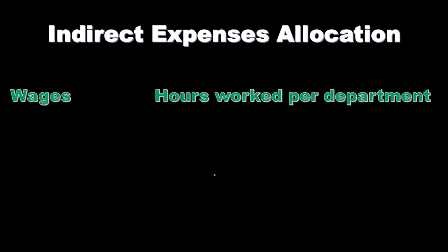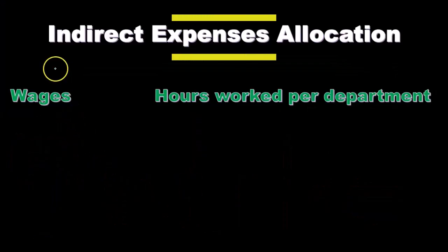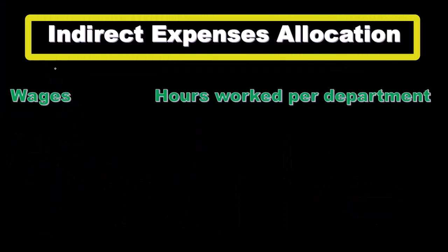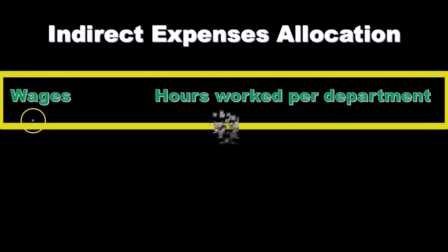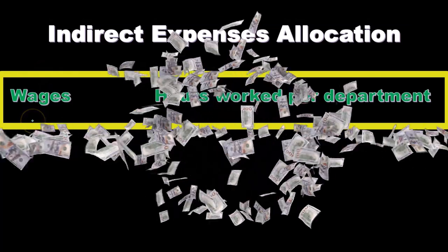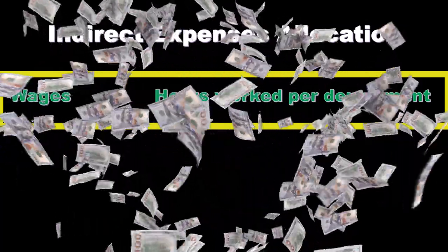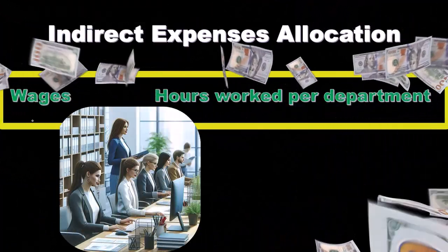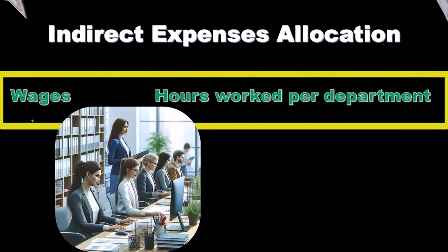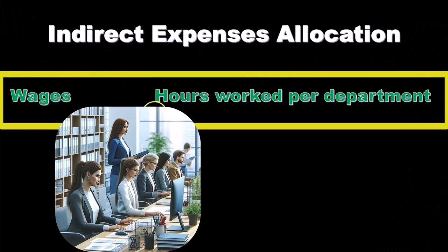Here are some common types of allocation bases — activity bases — common things that we would need to allocate out. If we're allocating something like wages, let's say we have someone we're paying who is going to be in charge of multiple different departments. We might look at the hours worked per department to allocate out those wages.